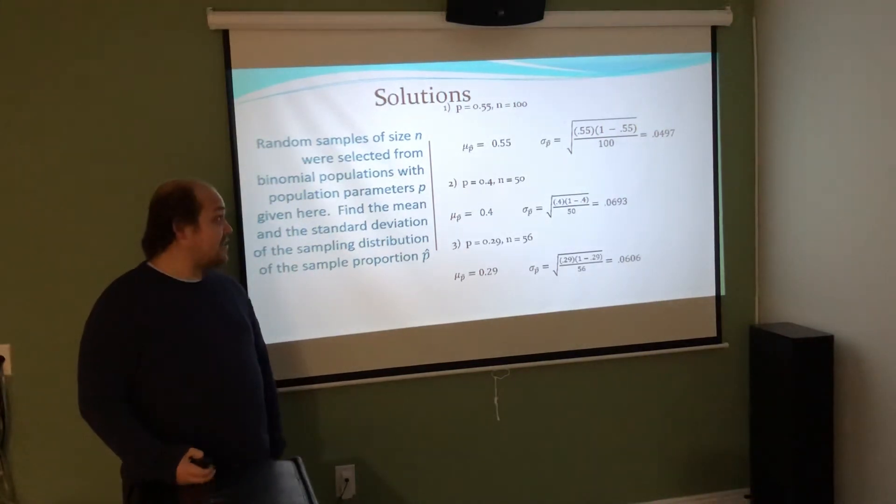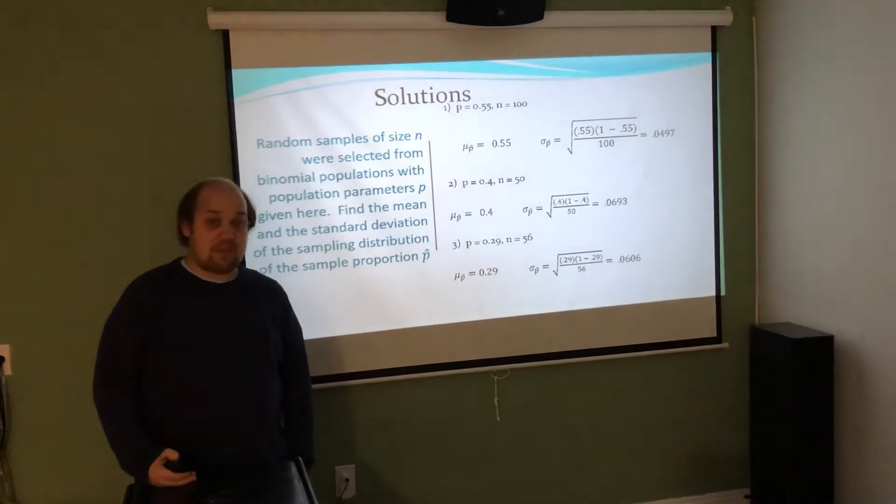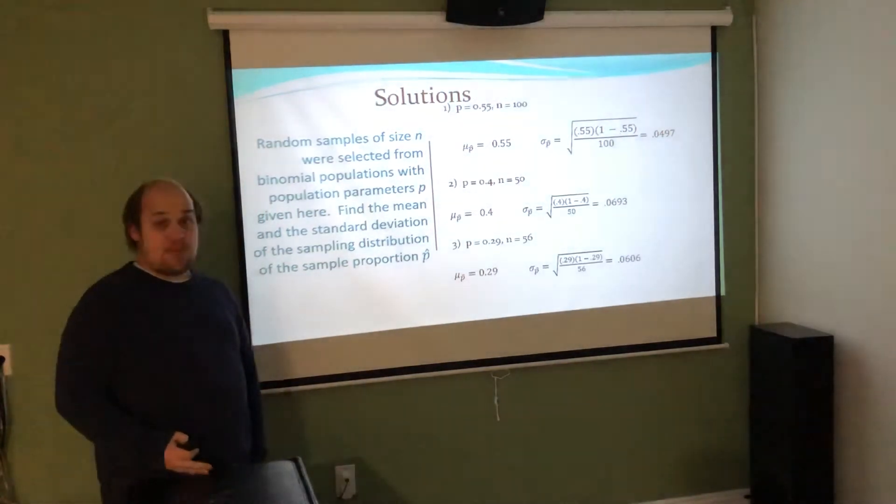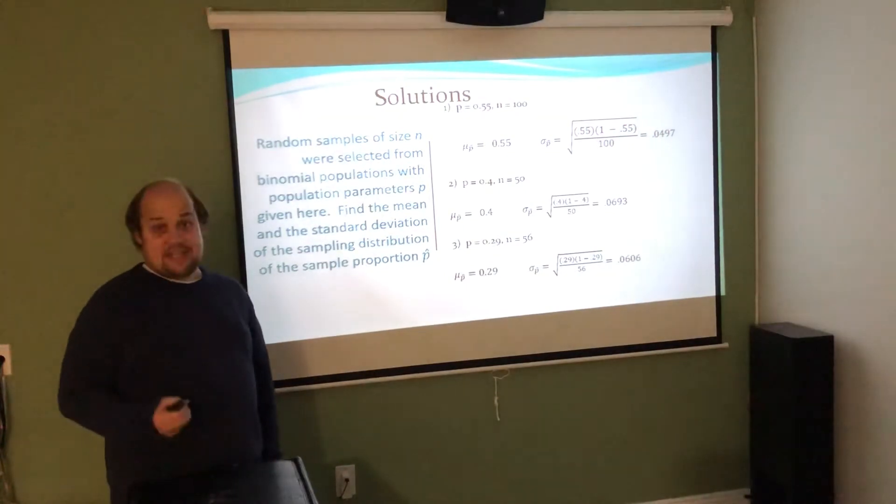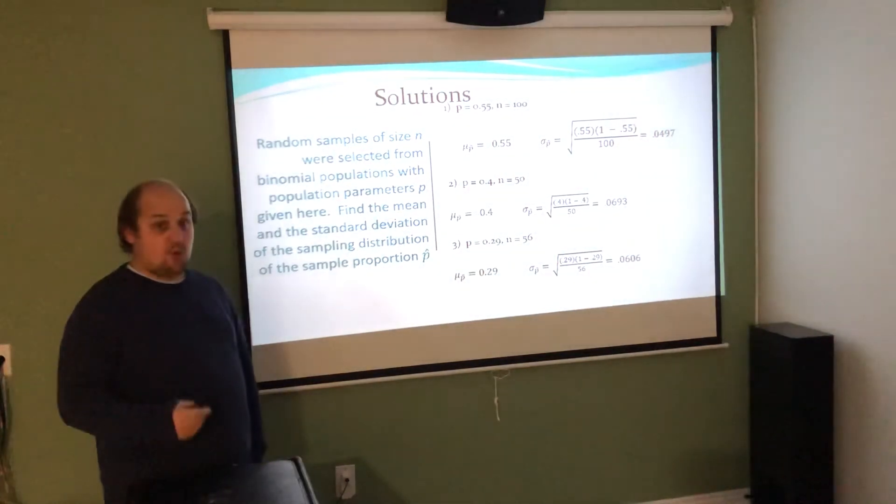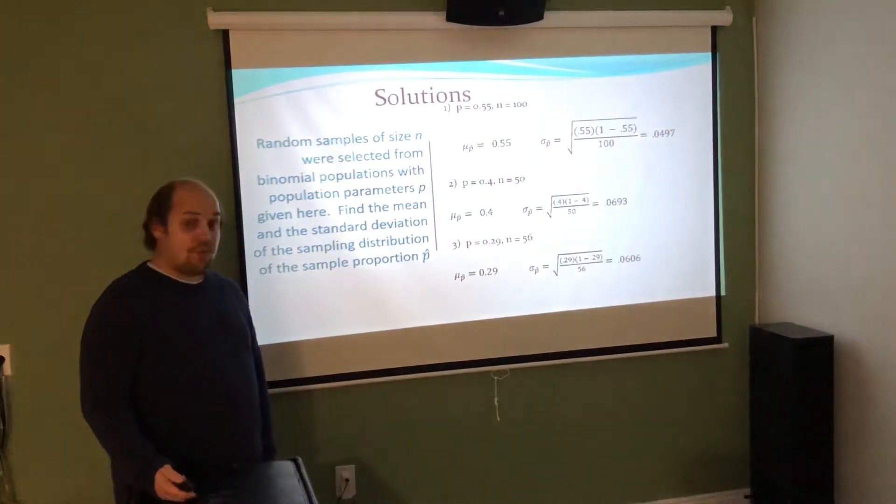In each of these cases, I rounded to 4 decimal places, probably because I'm used to looking up things in the normal table. As you're doing these in Cengage, try your best not to round it and keep whatever number it is. Only round when you get to the z-score part.